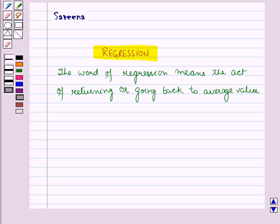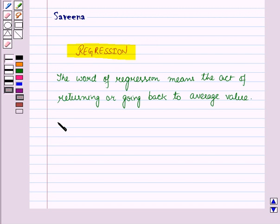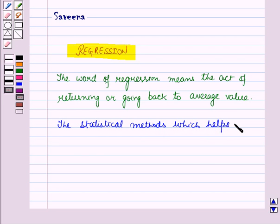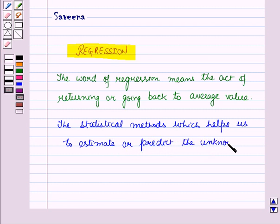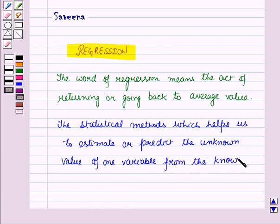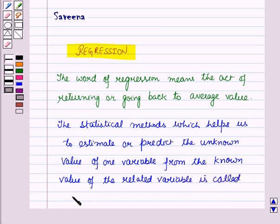Regression also helps us to predict the value of one variable, the dependent variable, from that of the other independent variable. Therefore, the statistical methods which help us to estimate or predict the unknown value of one variable from the known value of the related variable are called regression.